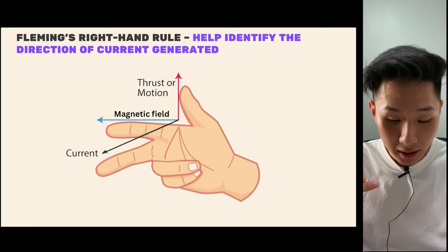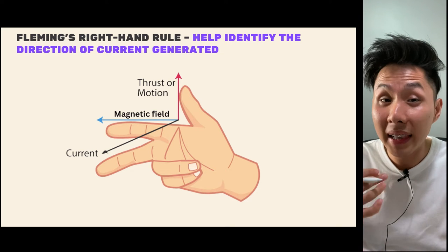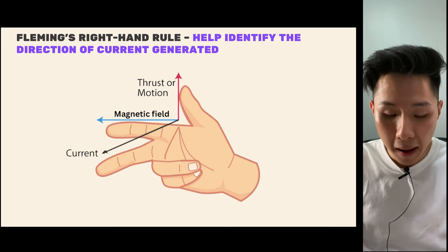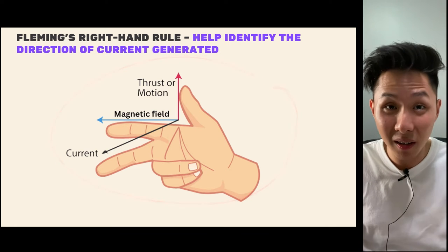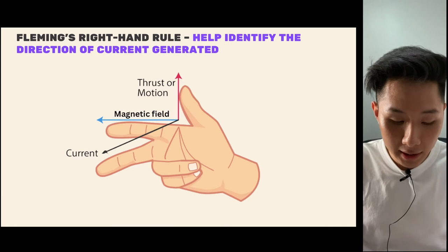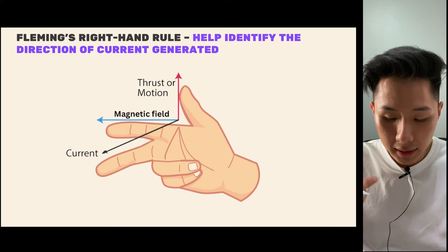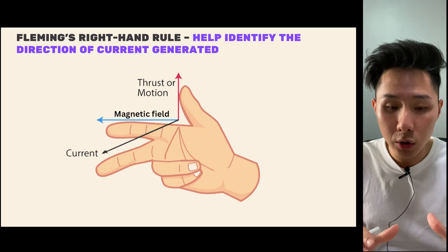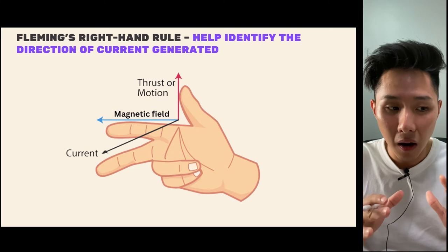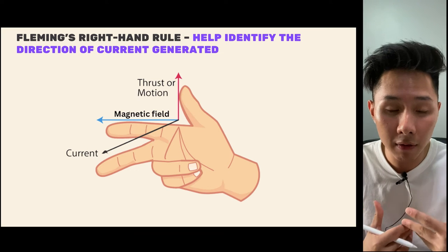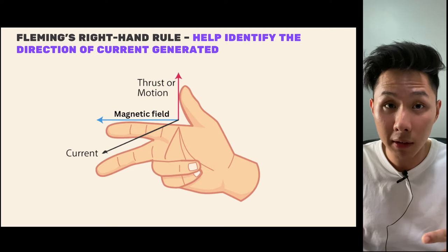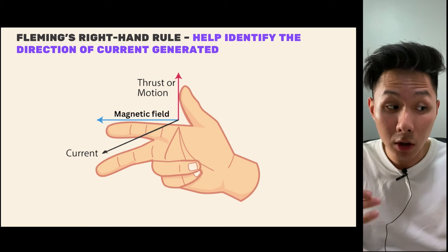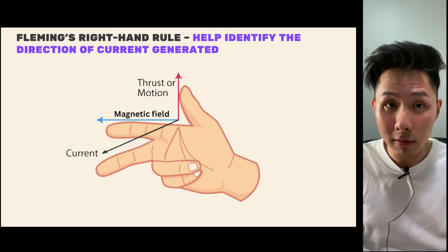In chapter 20 we learned about Fleming's left-hand rule, which helps us identify the direction of force generated. In this chapter we have Fleming's right-hand rule, which helps us identify the direction of the induced current. Use the left hand for electromagnetic force questions, and the right hand when you want to find the direction of the induced current.